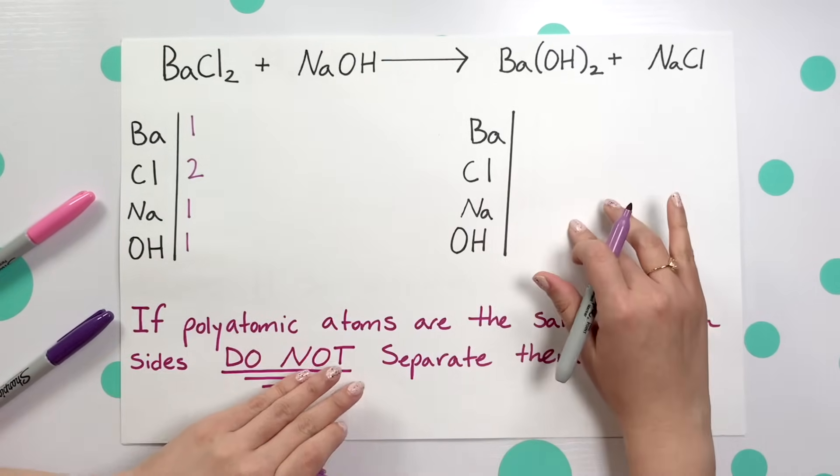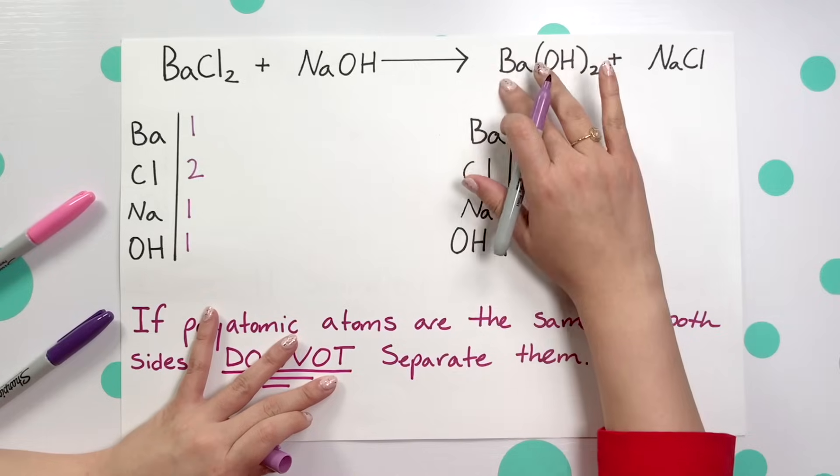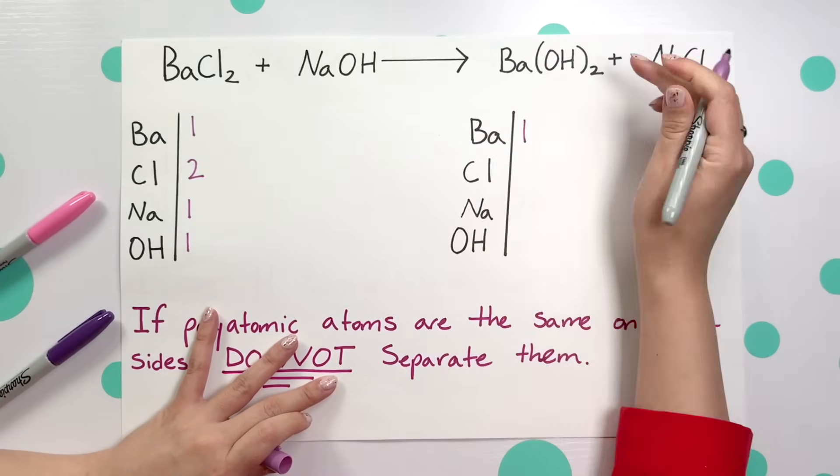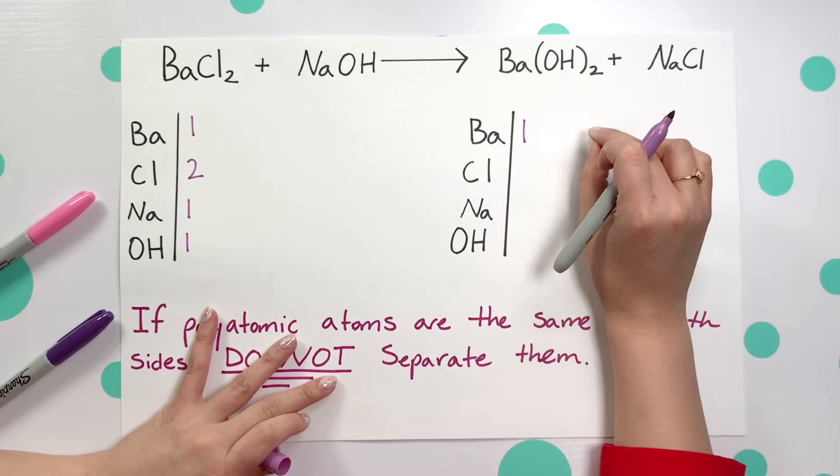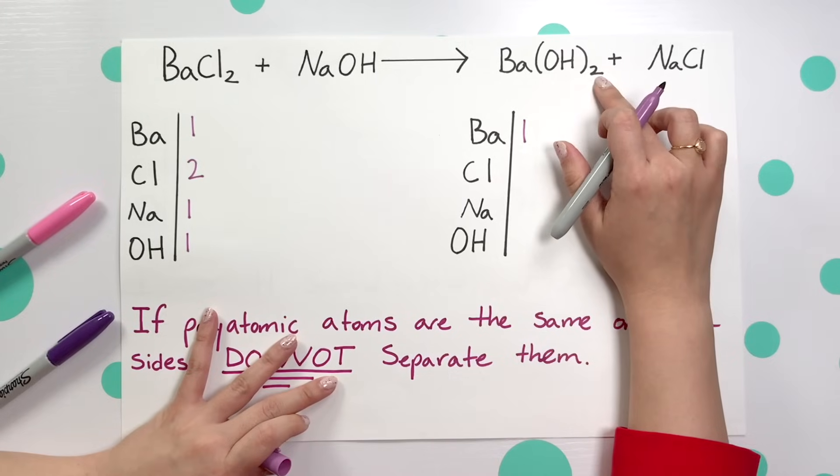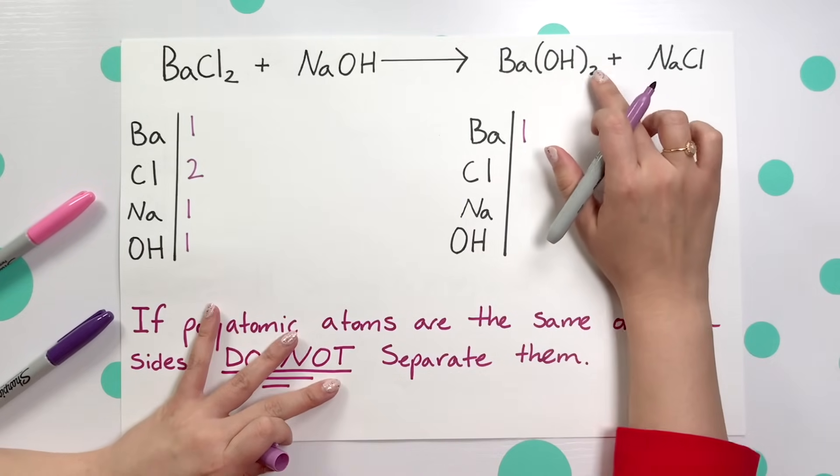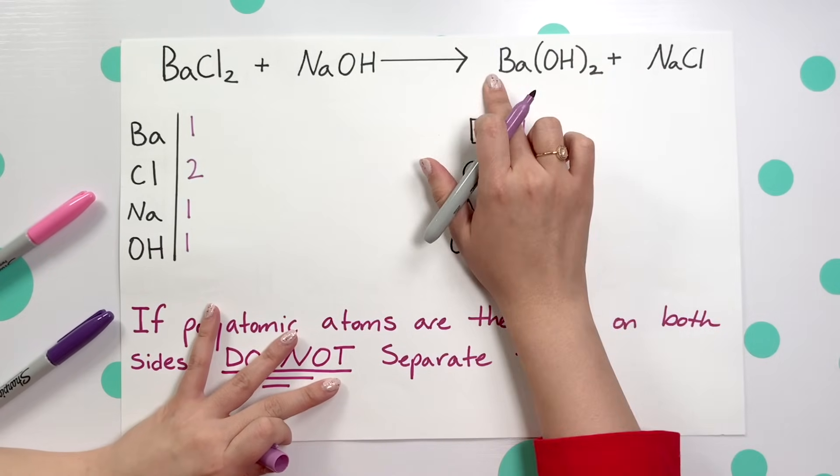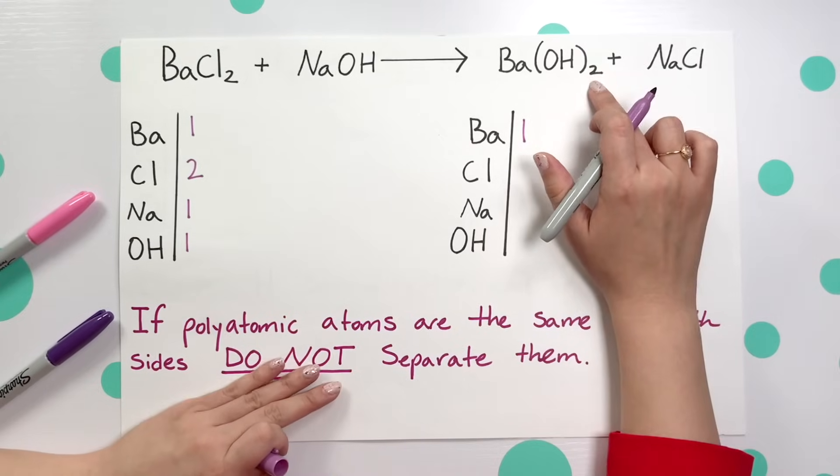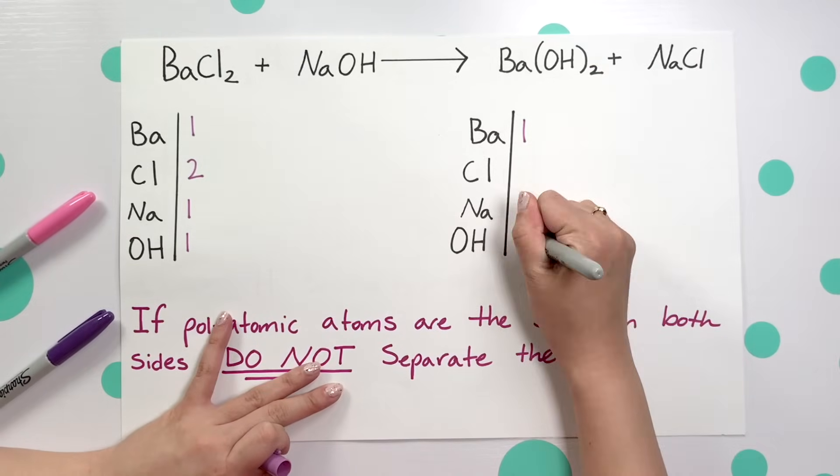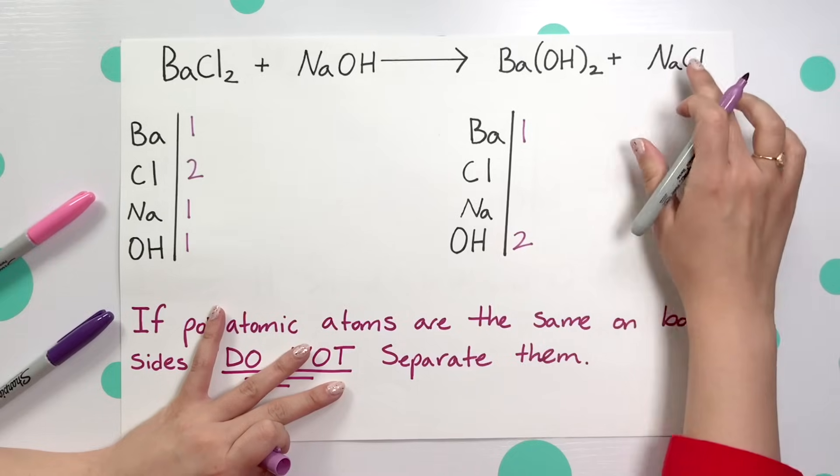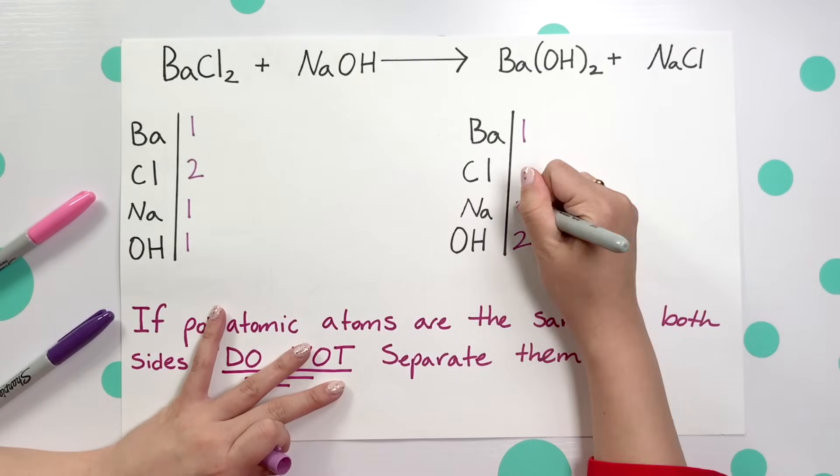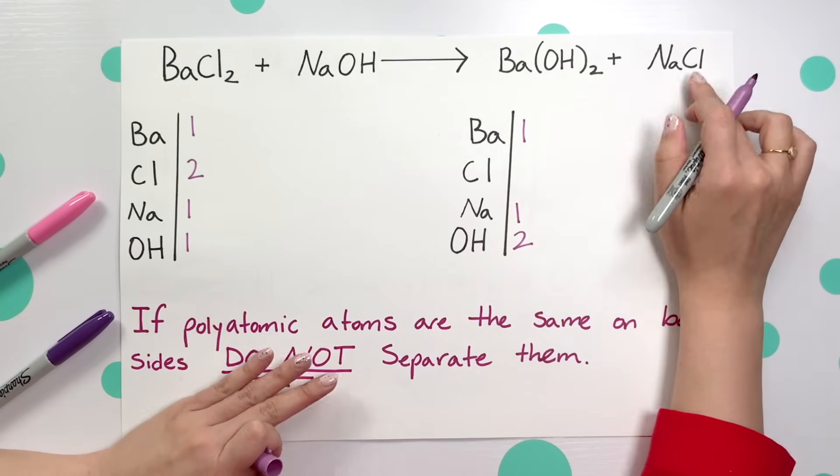Now going to our products we'll see that barium only has one. Now I'm going to look at OH and see that there's actually a two subscript. That two only affects the OH group, not barium. So this is saying there are two OHs, and then we'll have one Na or sodium and one Cl or one chlorine.